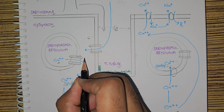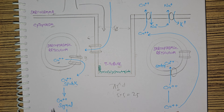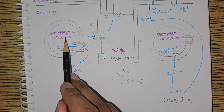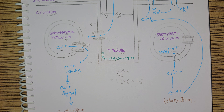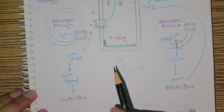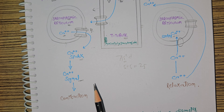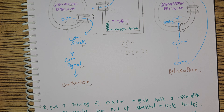Through these channels — these are ryanodine receptors present in the sarcoplasmic reticulum — when the action potential comes, it results in the release of calcium from the sarcoplasmic reticulum into the cytoplasm. The sarcoplasmic reticulum is the endoplasmic reticulum of a cardiac muscle cell, and when calcium is released from these ryanodine receptors, this calcium results in the contraction of a cardiac muscle cell.